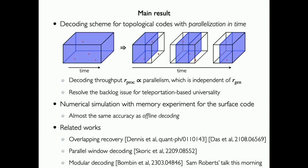There are two very relevant concurrent papers with similar results. First is parallel window decoding by Skoric et al., posted on arXiv on the same day as ours. The second is modular decoding by Bombin et al., covered by Sam Roberts's talk this morning. Before describing sandwich decoding in detail, I will first review the typical procedure for error correction of topological codes.